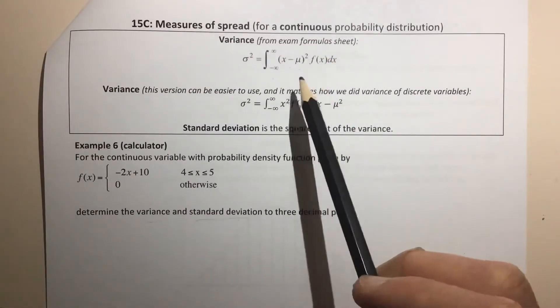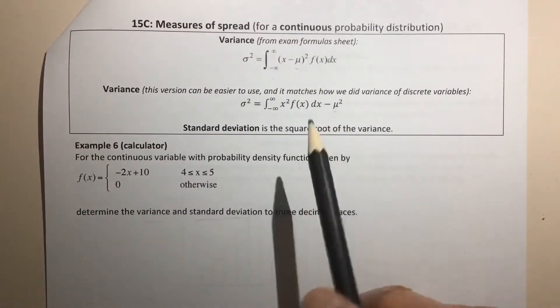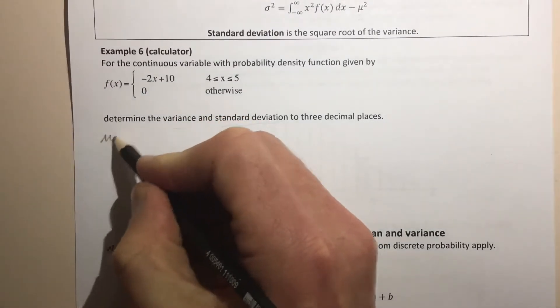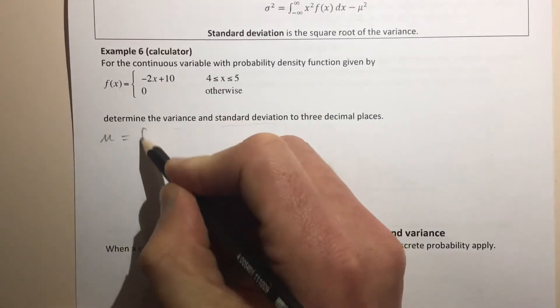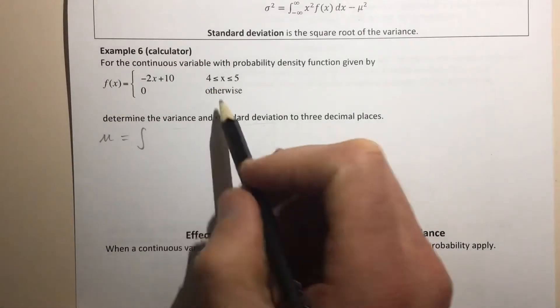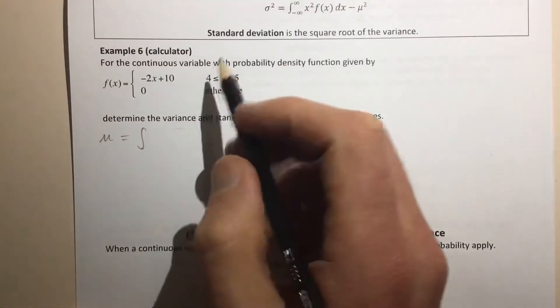Now, before we find the variance, whichever version of the formula you use, you need to know the mean first, right? So you always start by actually finding the mean, or the expected value. The mean is given by, and remember that's what we did in the last video in 15b,